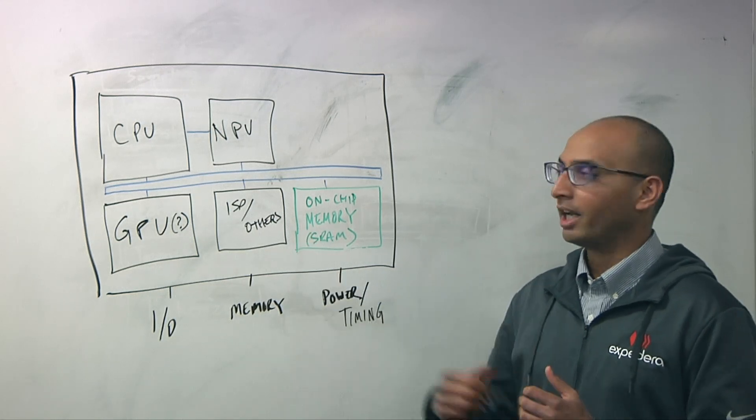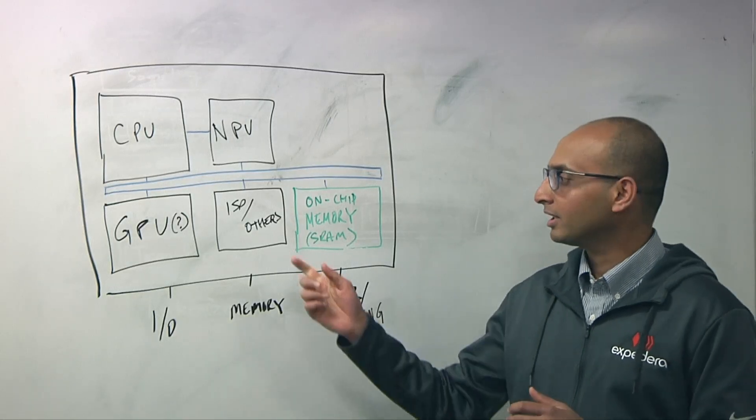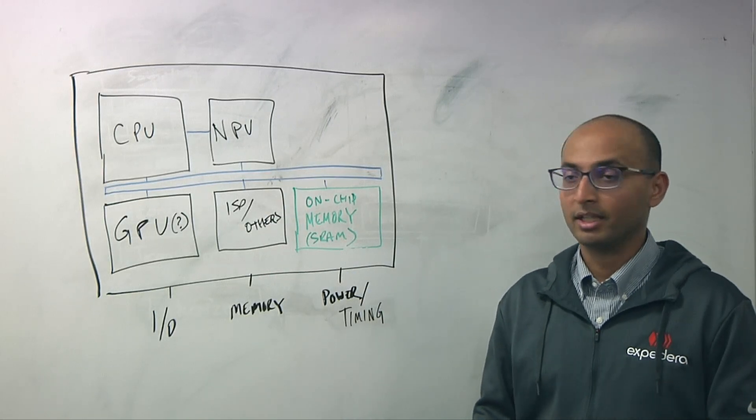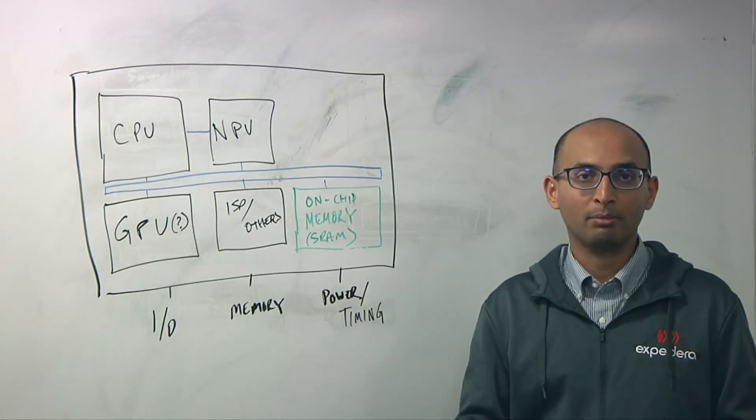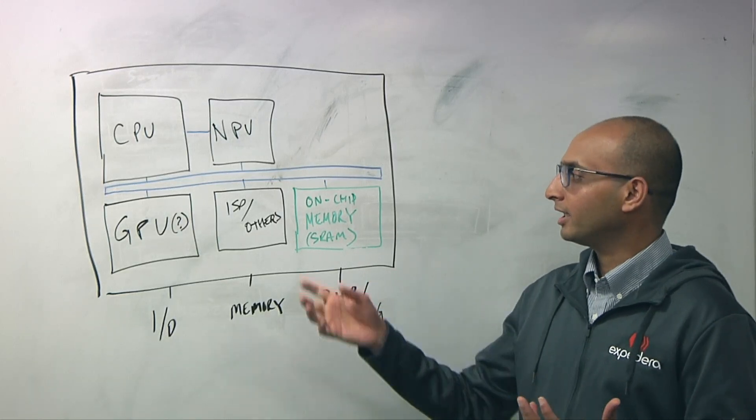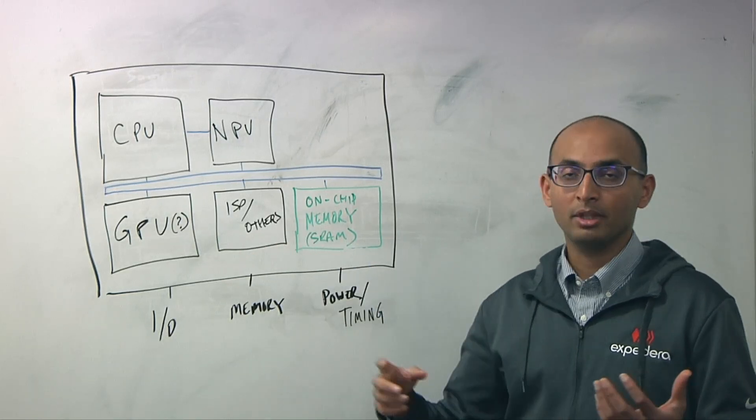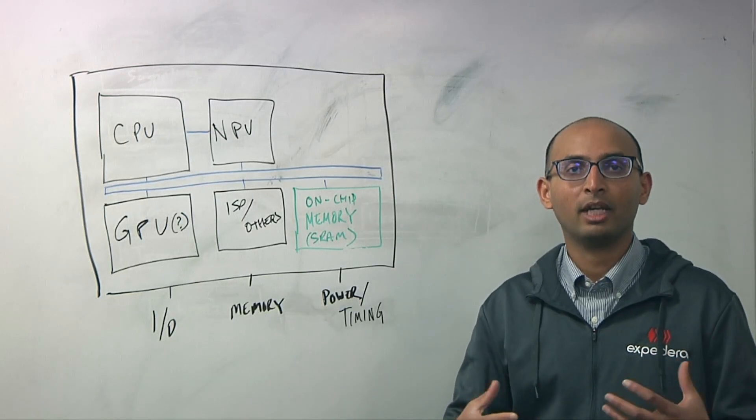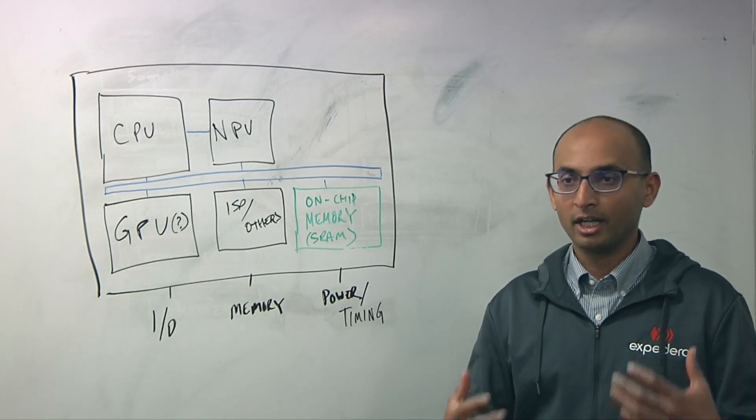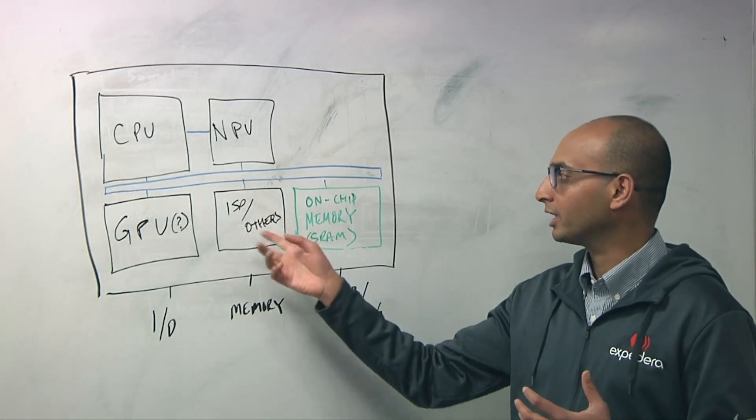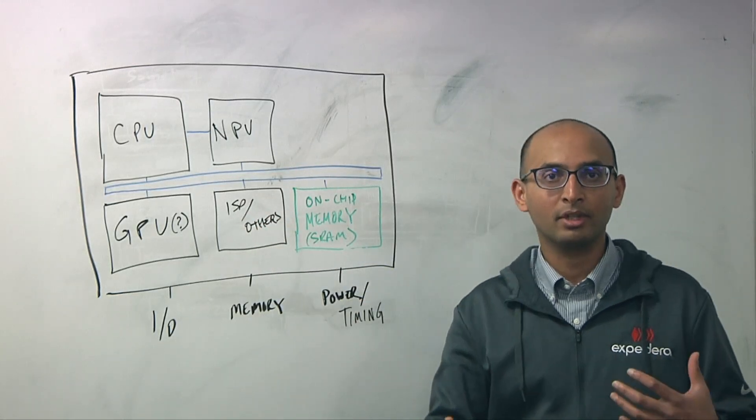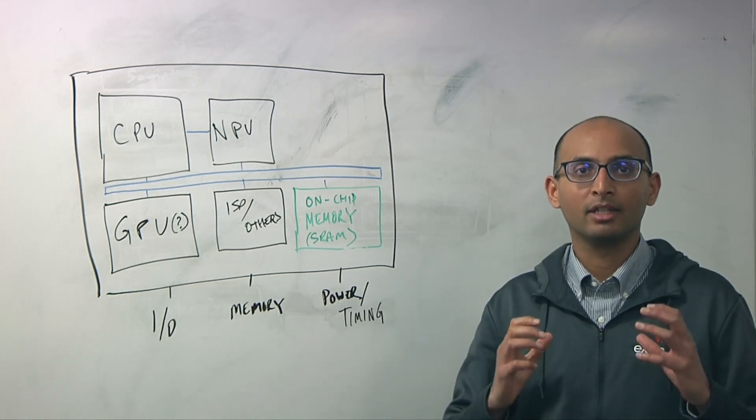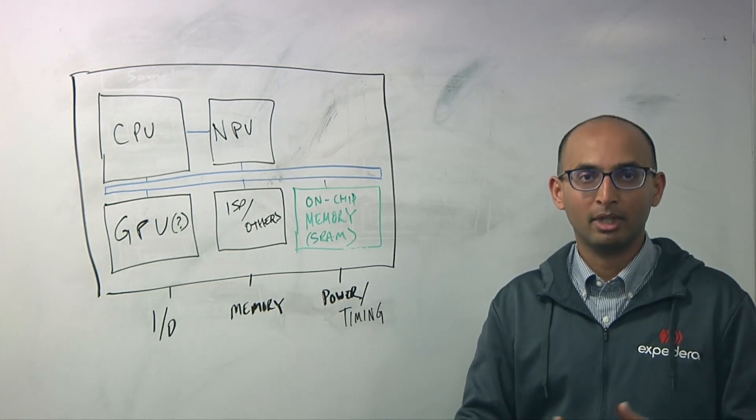So basically the ISP memory and NPU need to coordinate in terms of making sure that the buffer space is minimized and we need to schedule the entire pipeline of ISP NPU, ISP NPU back and forth to be able to give the best possible cost and power ratio to the application.